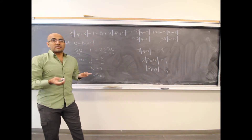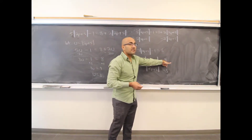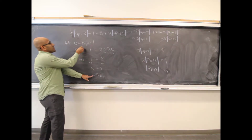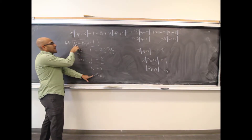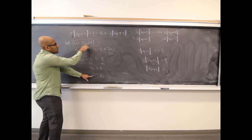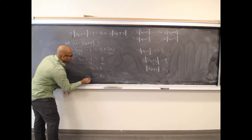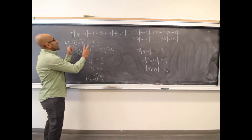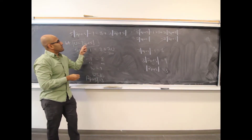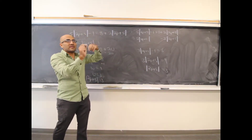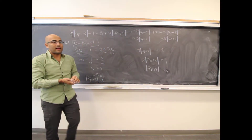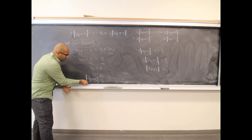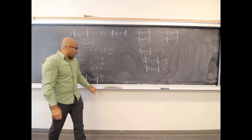Now we're back to a simpler case: the absolute value of 2p plus 5 equals 3. The u substitution isn't required — you could go directly by subtracting 2 copies of the absolute value from both sides, then adding 1 and dividing by 3. Either way, you arrive at the absolute value of 2p plus 5 equals 3.